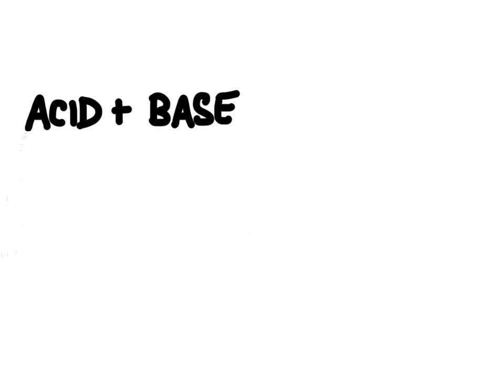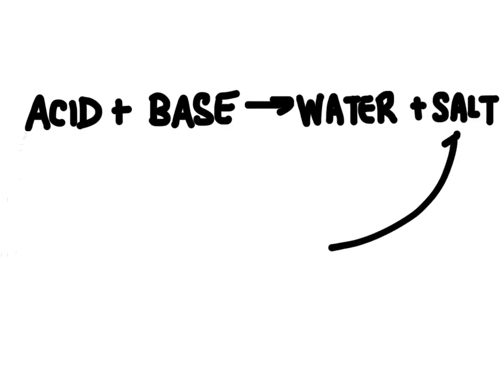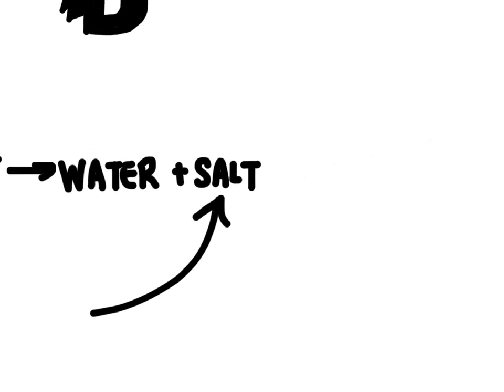In general, when an aqueous acid-base reaction takes place, it's going to produce water and a salt. Now the word salt isn't just referring to sodium chloride, that is table salt. It's referring to an ionic compound, something that's made up of a cation, that's something with a positive charge, and that's usually a metal, and then an anion which has a negative charge, and these two things will come together and form that salt.